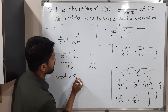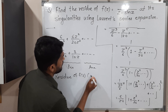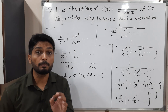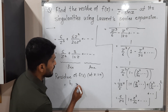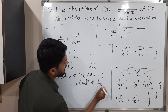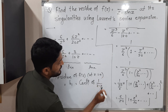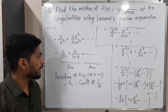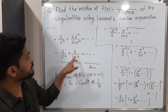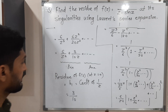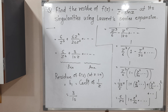We have to calculate the residue of f(z) at z = 0. By definition, the residue is b₁, the coefficient of 1/(z − z₀). Since z₀ = 0, we need the coefficient of 1/z in the Laurent expansion. From our result 6/z³ + 3/(10z) + ..., the coefficient of 1/z is 3/10. Therefore the residue is 3/10.